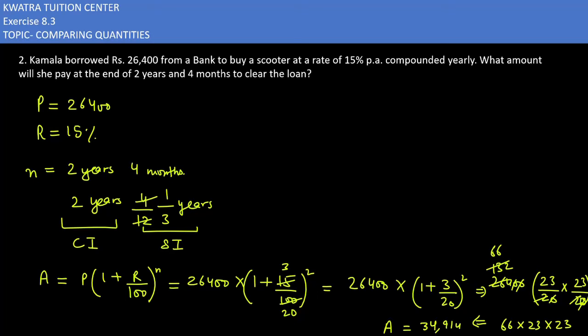Now what do we need to do? We need to take simple interest and take this value. What will your amount become? Principal will become 34,940 for the simple interest calculation for 4 months. What is the rate given to you? It will be as it is, which is 15%. Time is given as 1 by 3. Now what is the simple interest formula? P into R into T over 100.